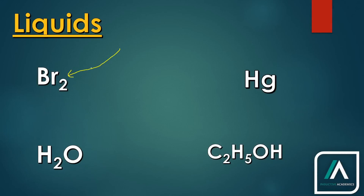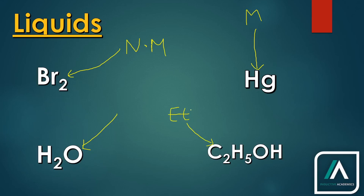Which metals or substances are liquid at room temperature? Mercury is the only metal that is liquid at room temperature. Water — everyone knows this is liquid at room temperature. And ethanol is also liquid.